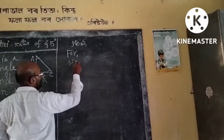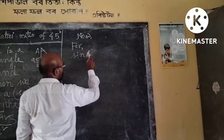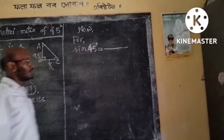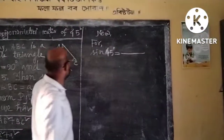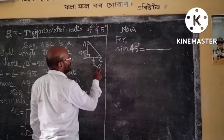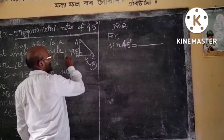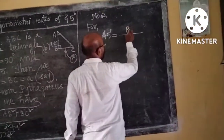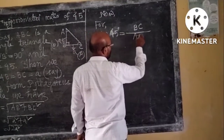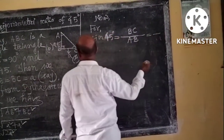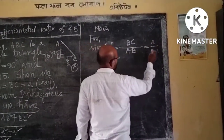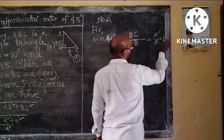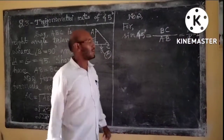Now for sin 45 degrees — from the trigonometric ratio, perpendicular is BC and base is AB. So sin 45 equals perpendicular by hypotenuse, which is BC by AC. BC is A and AC is root 2 A, so after cancelling we have 1 by root 2.